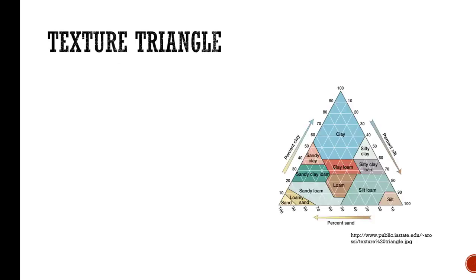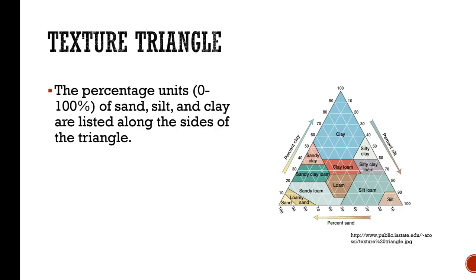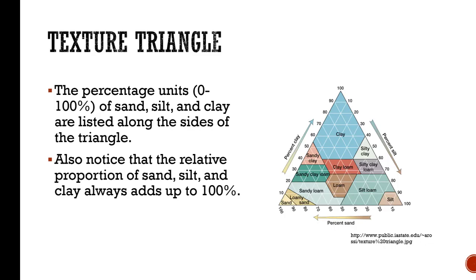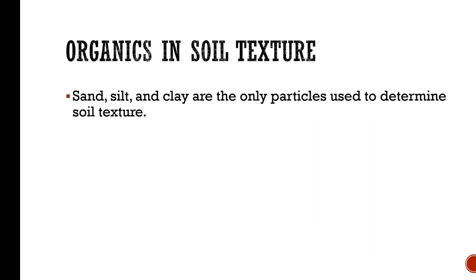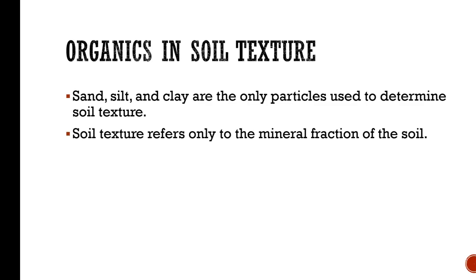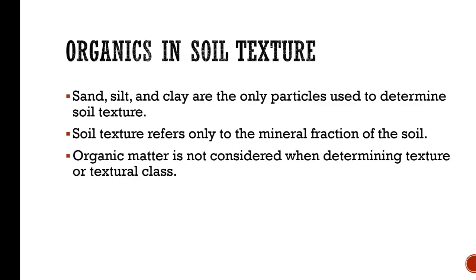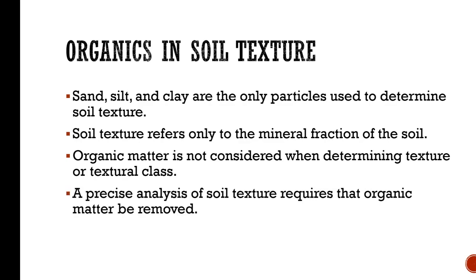Here's the triangle again. The percentage units — zero to one hundred percent — of sand, silt, and clay are listed along the sides of the triangle. Notice that the relative proportions of sand, silt, and clay always add up to 100%. When talking about soil texture, only sand, silt, and clay are used — it's only the mineral fraction of the soil. Organic matter is not considered when determining texture or textural class. If you're doing a precise analysis, you need to remove the organic matter, which is usually burned off.